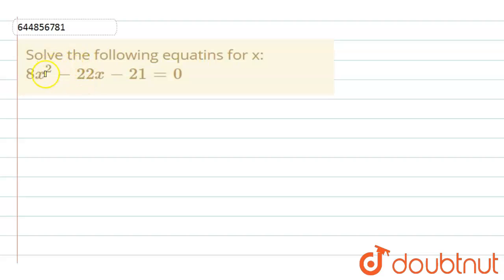Hello students, in this question we need to solve the quadratic equation for the value of x. So basically we have given that 8x square minus 22x minus 21 equal to 0.